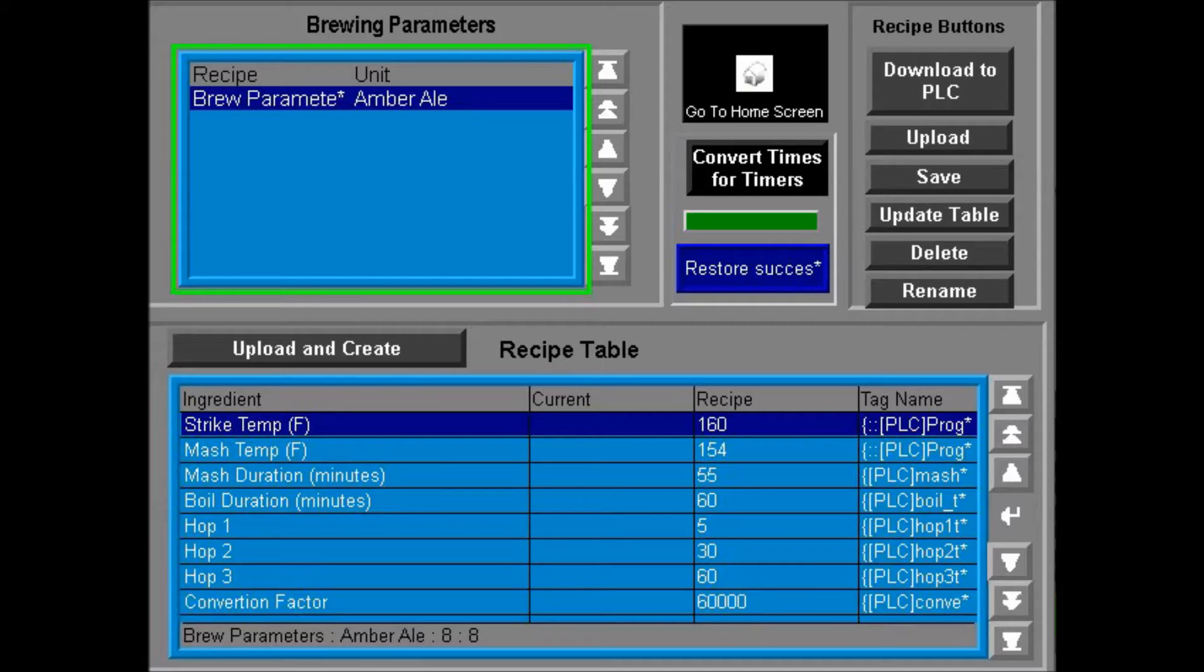From this menu, the user can create a new recipe by editing an existing recipe. Once the recipe is created, the user can upload the numbers to the PLC.